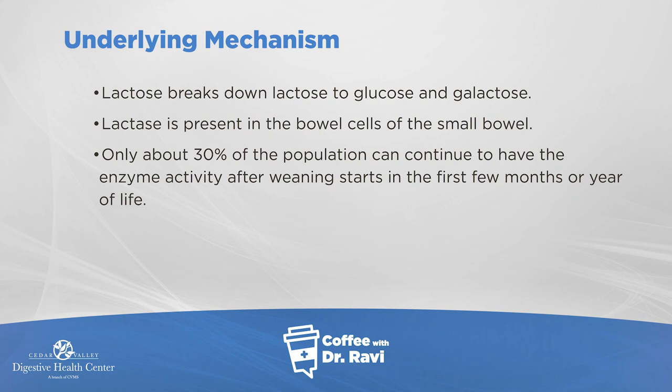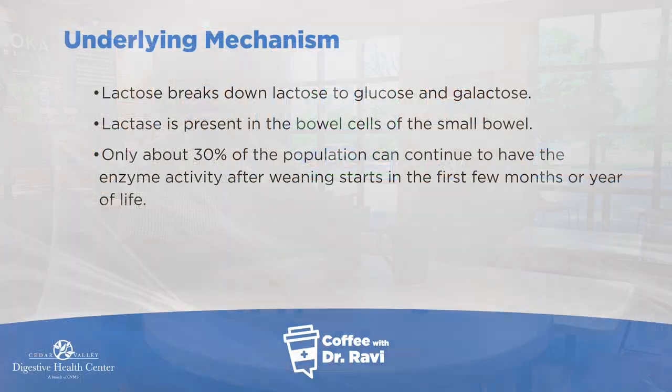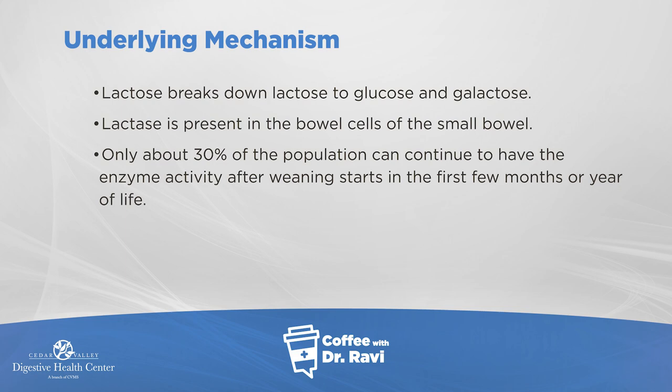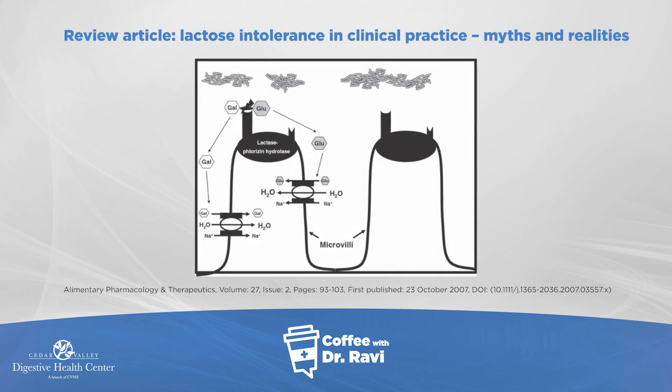The basic mechanism for milk intolerance is that when we take milk, the main sugar in milk is lactose. The lactose is then broken into glucose and galactose — two sugars that are then absorbed. The enzyme necessary for that is lactase, which is pretty active when we are born but we gradually lose it, as this slide shows.